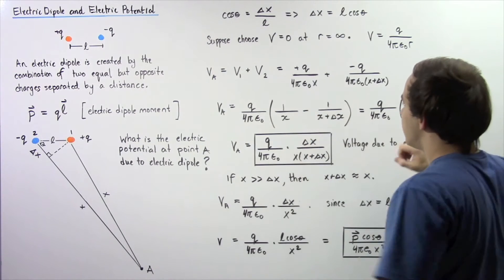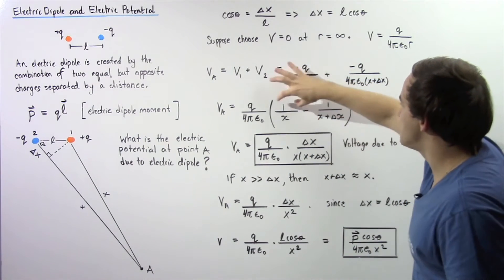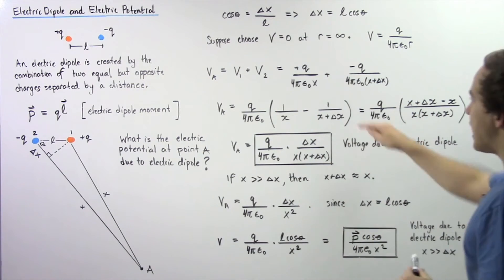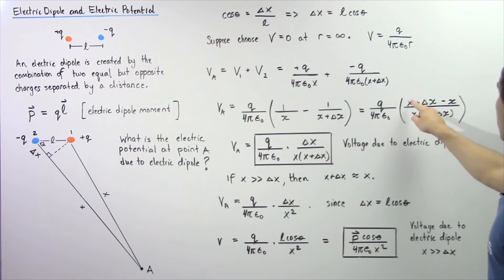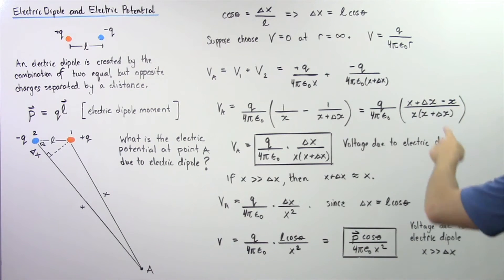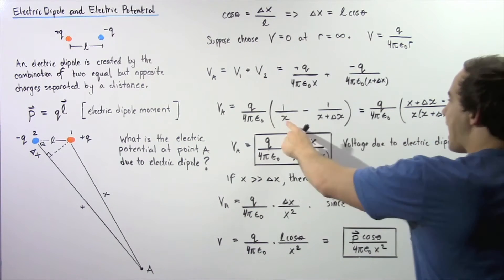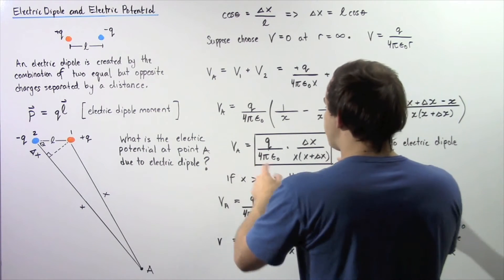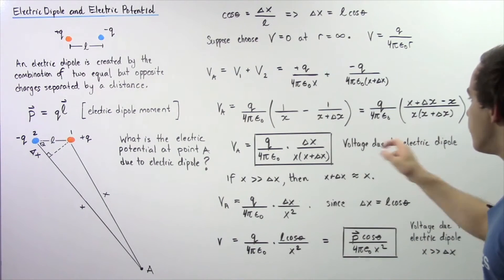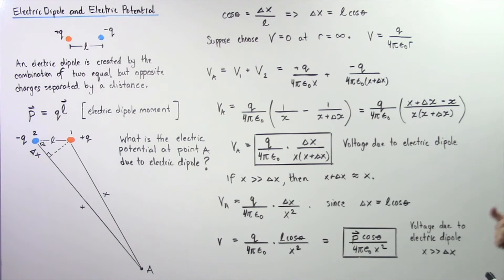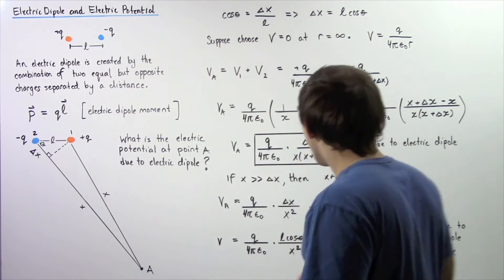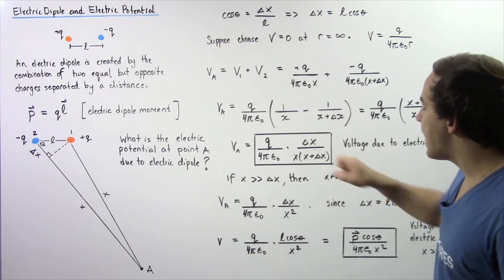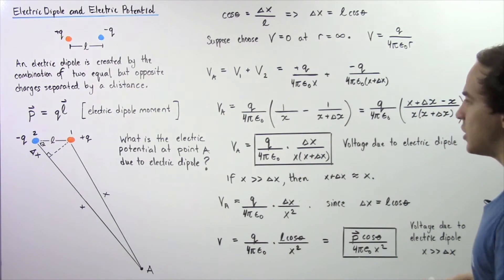Combining the two fractions by finding a common denominator, we multiply through and simplify: the numerator becomes (x + Δx) − x = Δx, and the denominator becomes x · (x + Δx). This gives VA = Q/(4πε₀) · [Δx / (x · (x + Δx))].